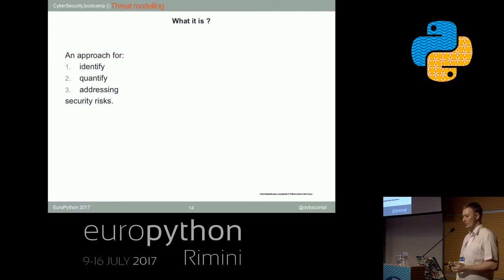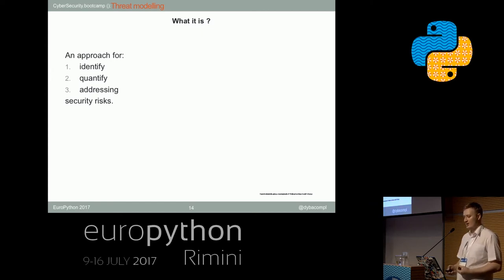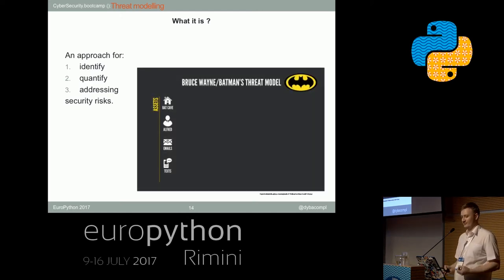One of the basic things we should start doing when we approach cybersecurity is threat modeling. It's an approach for analyzing the security of an application or a system. It should be structured and identify, quantify, and address the security risks associated with the target of the modeling. Now, let's imagine we are Batman.